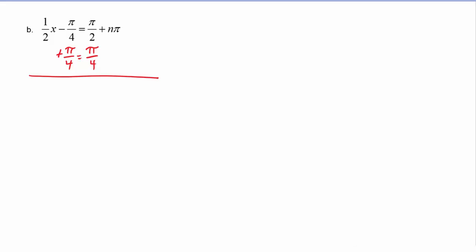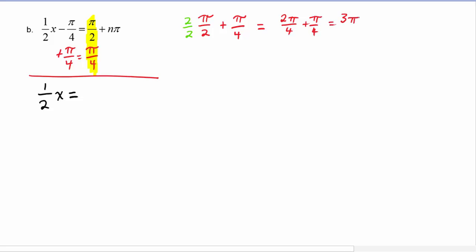On the left hand side, the negative pi over four and the positive pi over four cancel out, and we're left with one half x. On the right hand side, we're adding together pi over two plus pi over four. So we can come over on the side: pi over two plus pi over four. Our common denominator is going to be four, so we need to multiply pi over two by one in the form of two over two, and we get two pi over four plus pi over four is equal to three pi over four.